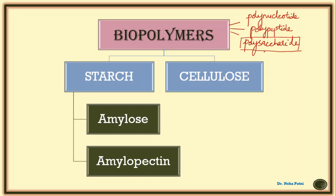Under carbohydrates, we'll cover starch and cellulose. Starch is itself a polymer having monomers amylose and amylopectin. Amylopectin is present in 80% amount and amylose in 20%. They are both polymers that combine to give the entire polymeric network of starch. Amylopectin is soluble in water while amylose is not. Amylose is a linear chain and amylopectin is a branched chain.